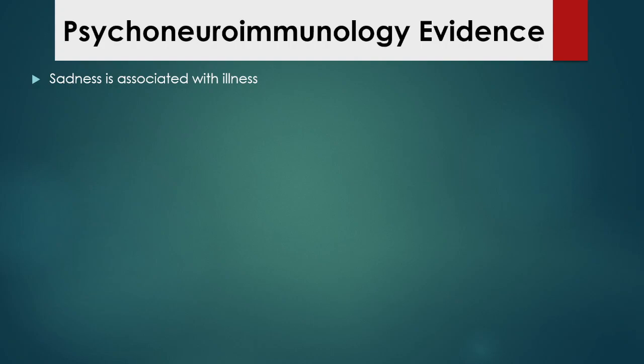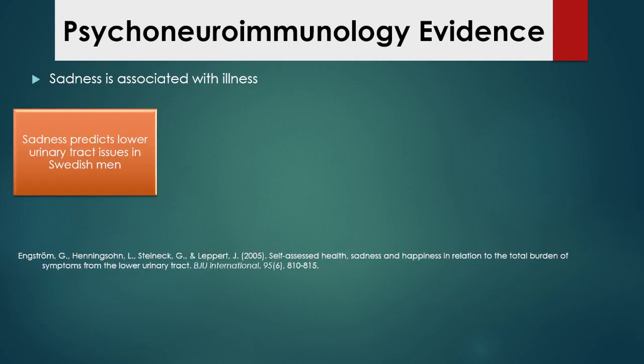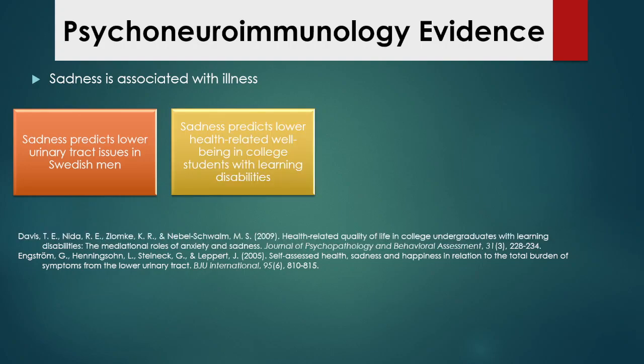From psychoneuroimmunology, there is evidence for sadness being associated with illness. There was a study of Swedish men that found that men who scored higher on a sadness scale reported more lower urinary tract issues — like incontinence or being unable to fully empty their bladder. There's sort of this connection between this emotion and functioning of the urinary tract system. Sadness also predicts lower health-related wellbeing in college students with learning disabilities — the article talks about feeling isolated, unsupported, and not feeling included, and that contributes to an overall feeling of sadness and ultimately lower health-related wellbeing.